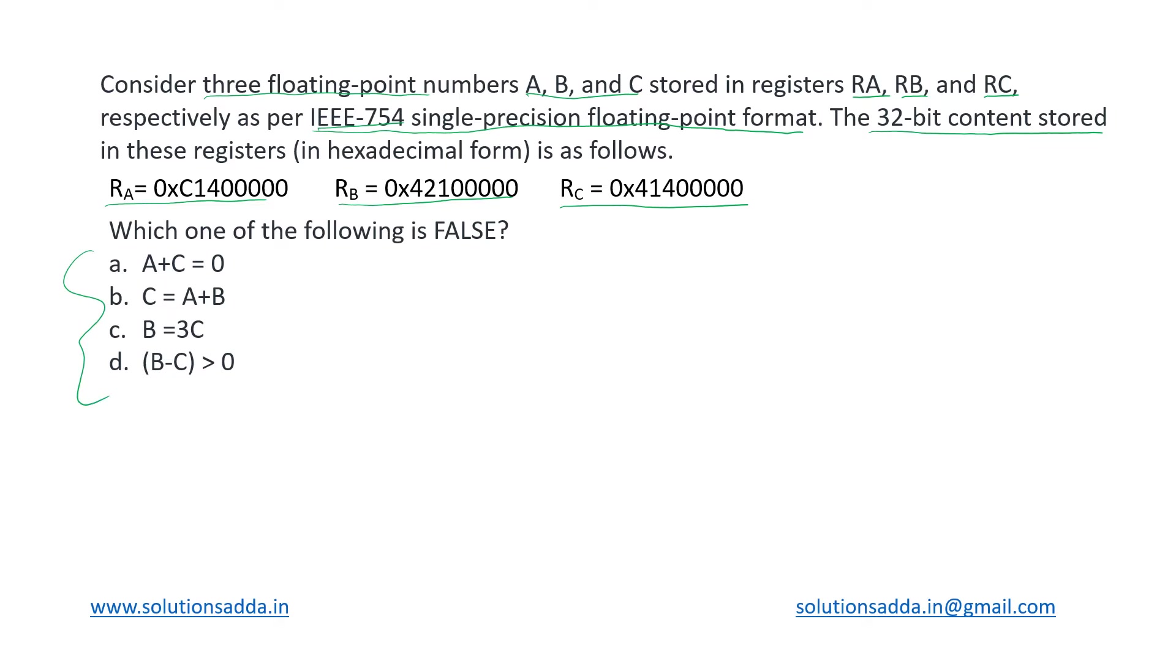Let us evaluate each of them one by one. The first one is RA: it is C14 followed by five zeros. Now these are actually 32-bit numbers but stored in hexadecimal form, that's why they have reduced to just eight bits.